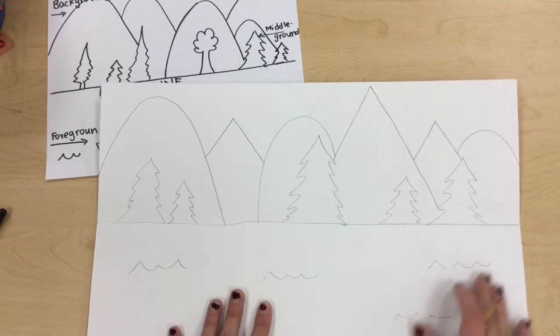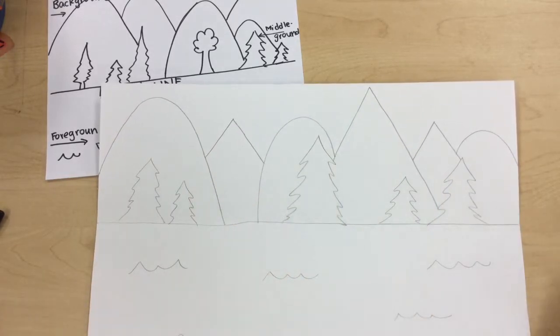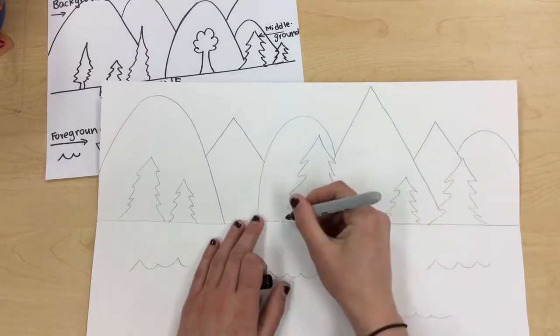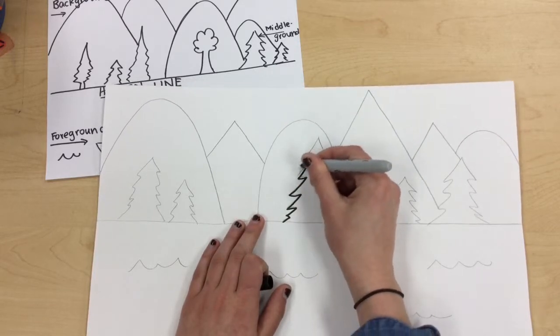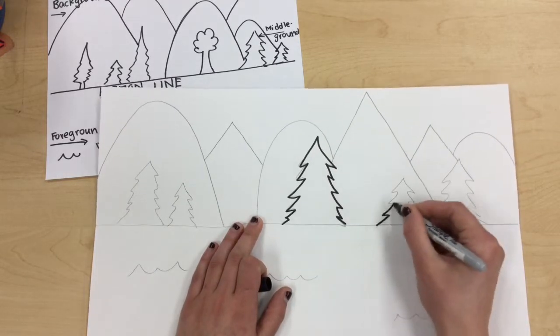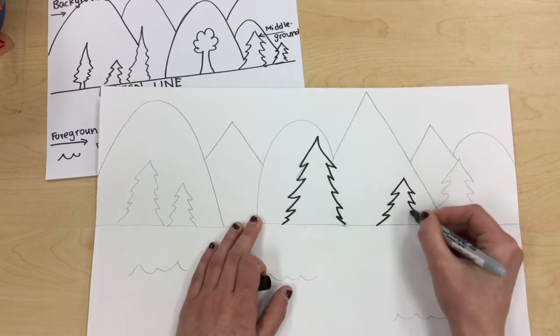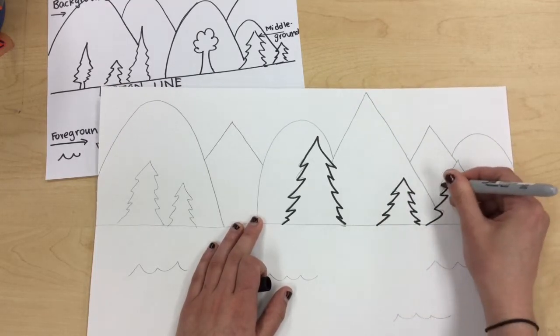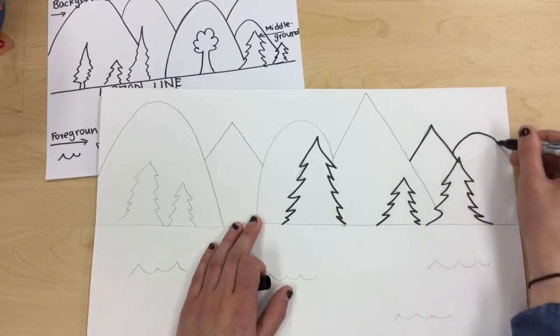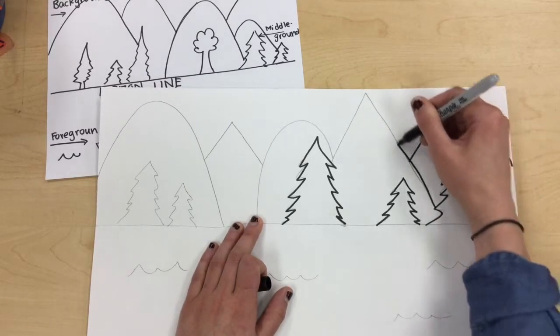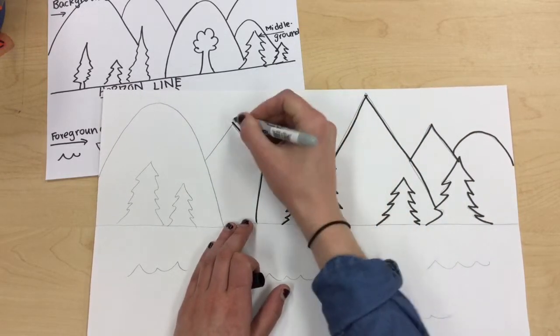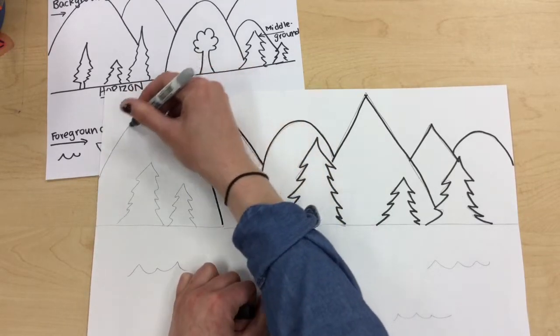So once you have drawn your entire landscape, the last thing you will do before we start painting is outline it with a Sharpie. And I am only going to draw over my pencil lines. Again, if you make a mistake and you don't follow them exactly like I don't sometimes, that's okay because there's always room to grow, and when we start painting you won't be able to see your pencil lines anymore. So once you are done, you will outline your entire artwork in Sharpie. All righty friends, I'm going to finish mine up and I'm going to let you keep creating.